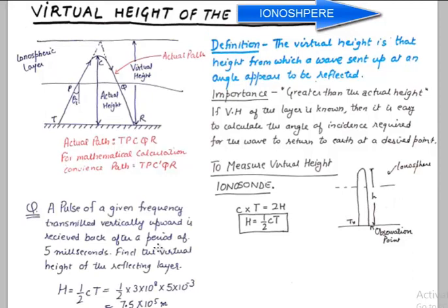A typical numerical could look something like this: if a pulse of given frequency transmitted vertically upward is received back after a period of 5 milliseconds, we know the time is 5 milliseconds and it travels at the speed of light. We can easily calculate the height, and the height turns out to be 7.5 × 10^5 meters.